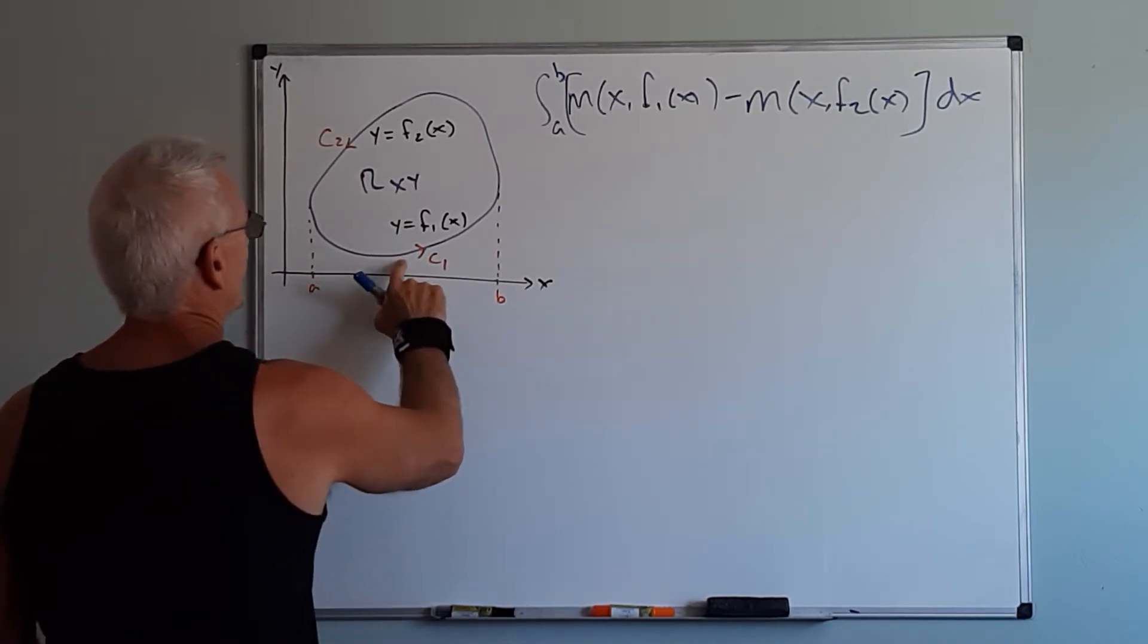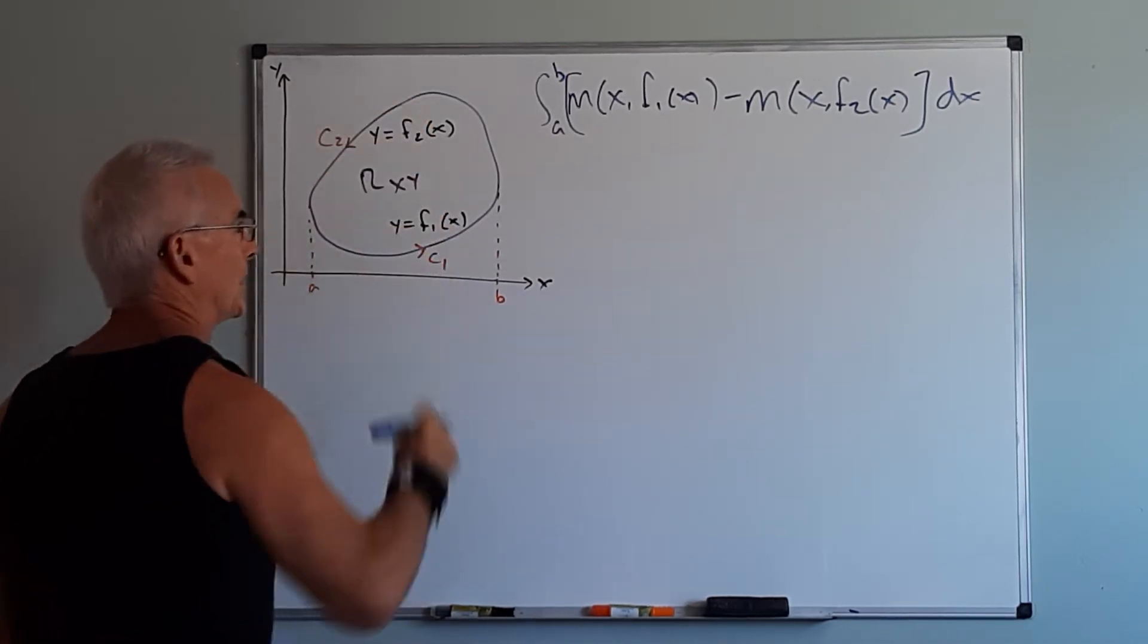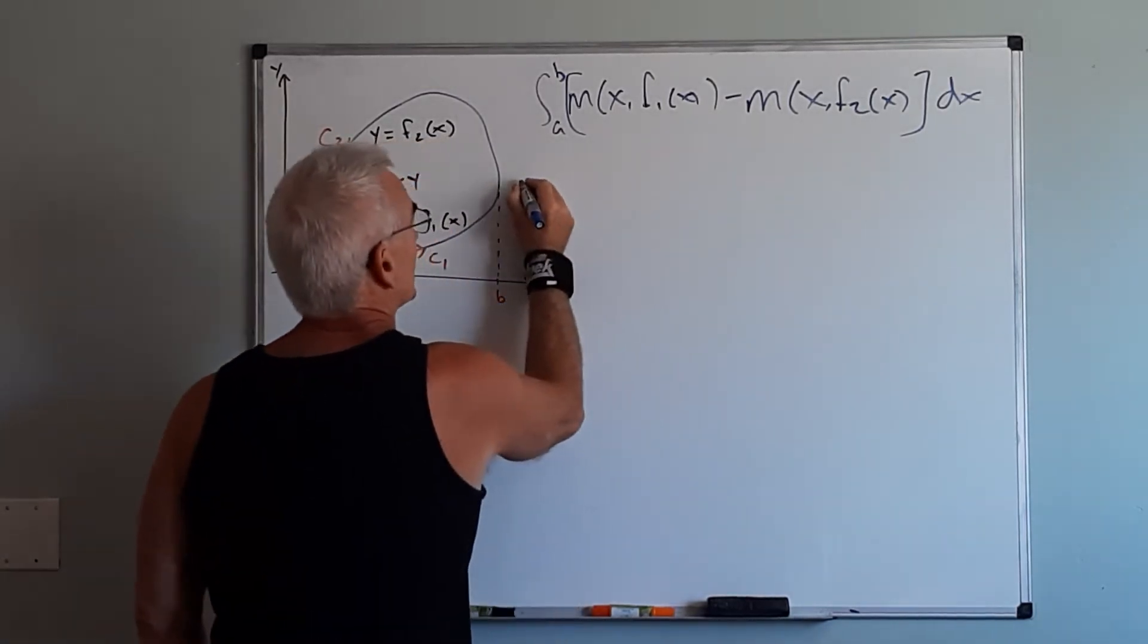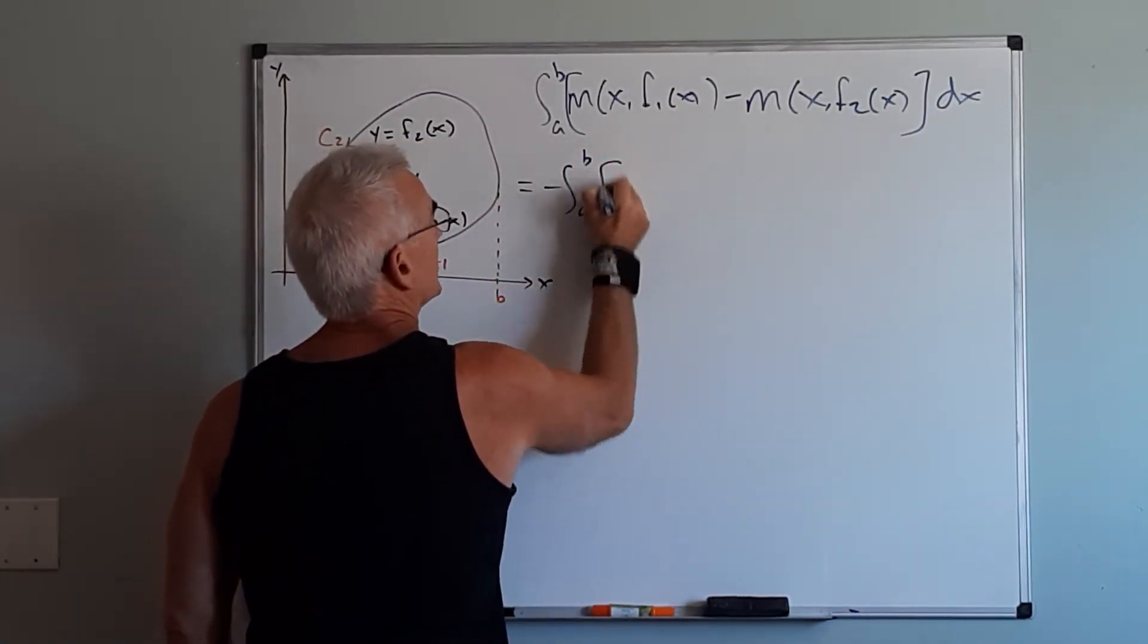But we notice that f1 is below and f2 is above so we really want to reverse the order of the subtraction here. So we'll write that as the negative a to b.